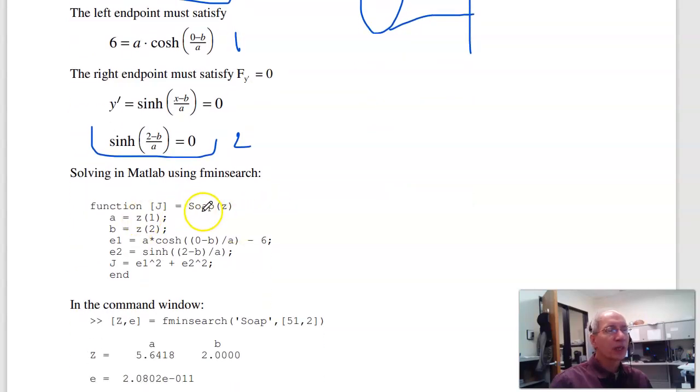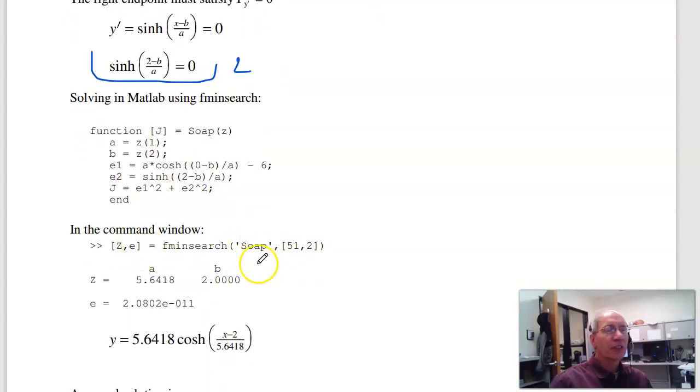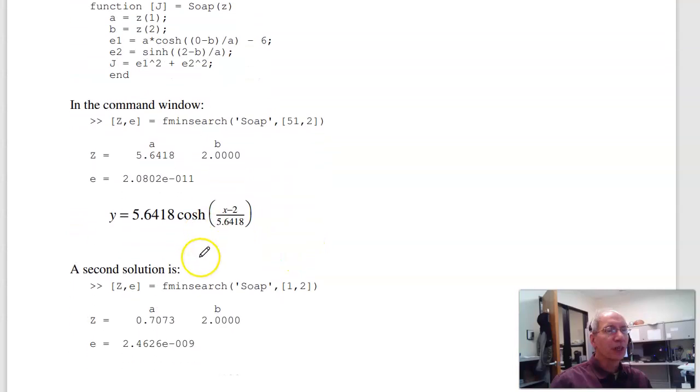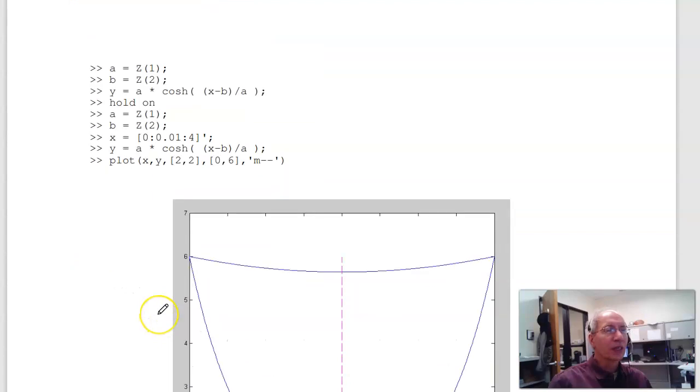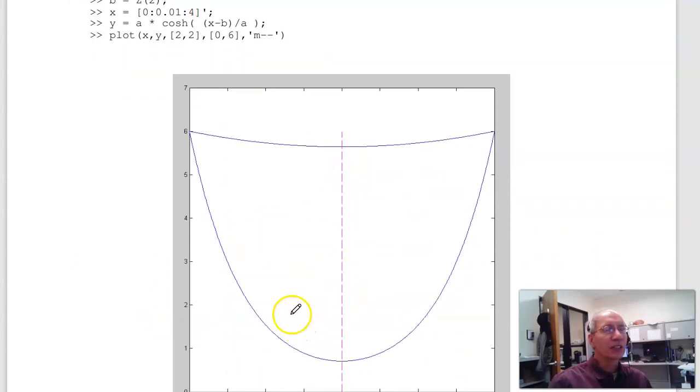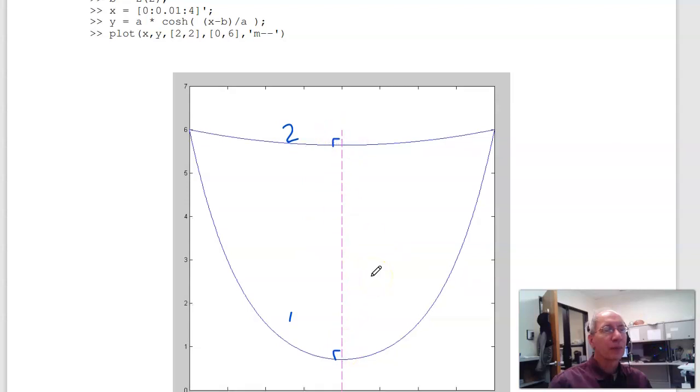Same approach as before: throw that in fminsearch. Here's my guess of a and b, there's the first equation, there's the second equation. Find a and b so that both are zero. If I start with this initial guess, here's the solution. Give it a second initial guess, there's my solution. There's actually two solutions to this problem. The error is zero, so they're both valid. If I plot them, here's the two shapes. This is the first solution, there's the second solution. Notice that the interface is perpendicular.